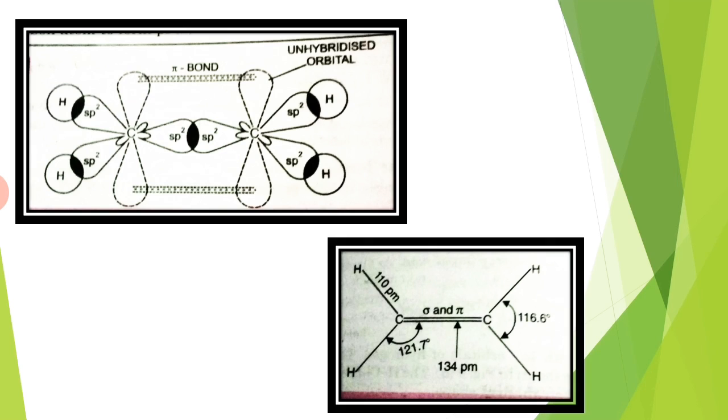In ethylene, the 2p unhybridized orbitals participating in the pi bond are parallel to each other. For the proper sidewise overlap of these 2p orbitals, all the atoms in the ethylene molecule must be in the same plane. Thus, the formation of the pi bond restricts the molecule into the planar shape. Therefore, ethylene is a flat or planar molecule.